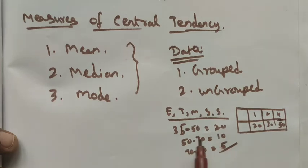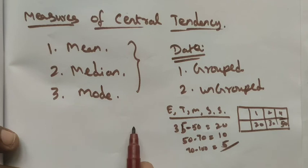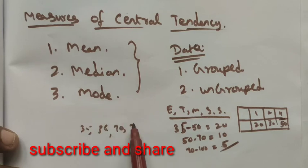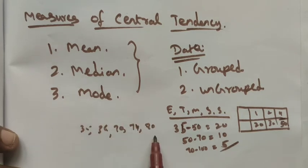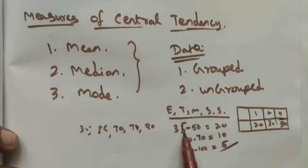Simply, ungrouped data means all the students in a class have scored marks only in one subject — we are entering those numbers: 35, 36, 70, 74, 80, like this. This data is called ungrouped data. Particularly, all the students have taken marks in a single subject entered like this. In grouped data, 10 students have scored 35 to 50, or 60 to 70 — in this manner. This is grouped data.